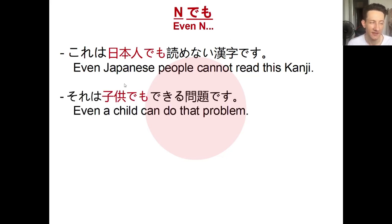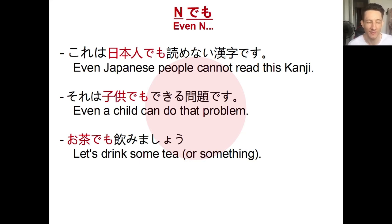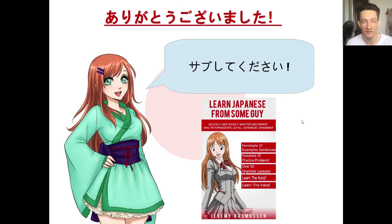Another example: sore wa kodomo demo dekiru mondai desu — that is a problem that even a child can do. Kodomo demo dekiru: even children can do it. Demo can also carry a different nuance — for example, ocha demo nomimashō — let's drink tea or something. Here you're giving a casual suggestion, meaning 'tea or whatever.' So demo has both the 'even' meaning and a casual 'or something' meaning, both very useful.